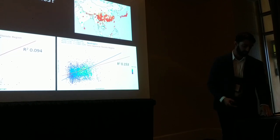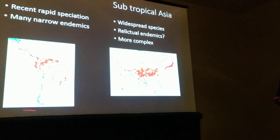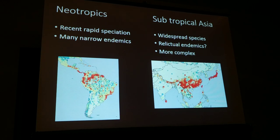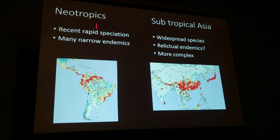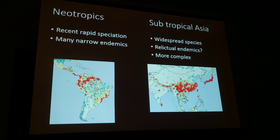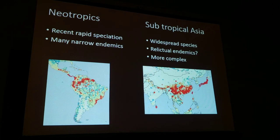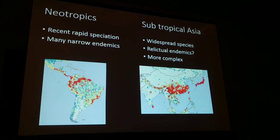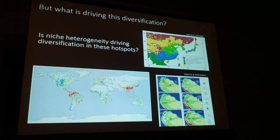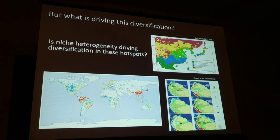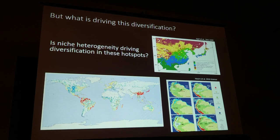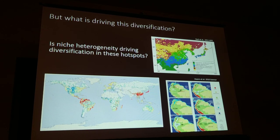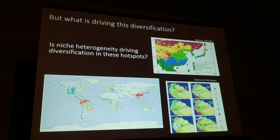To summarize: in the neotropics, our biodiversity hotspots seem to be products of recent rapid radiations, with many narrow endemics as Rala Trion hypothesized. But in the Sino-Japanese floristic region, the distribution of widespread species may be governing species richness, with many relictual endemics, making the processes in this area more complex. We've identified some of the global patterns of diversification in ferns, but this still doesn't fully answer what is driving diversification.